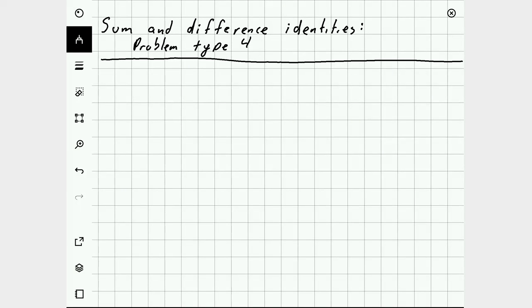Sum and difference identities, problem type 4. We've talked already about the sum and difference identities, so let's just jump in and take a look at what problem type 4 means.